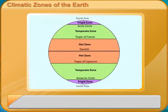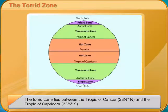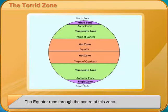The Torrid Zone lies between the Tropic of Cancer, 23.5 degrees north, and the Tropic of Capricorn, 23.5 degrees south. The equator runs through the center of this zone. Since the rays of the Sun fall vertically on a small area in this zone, it is the hottest part of the Earth.